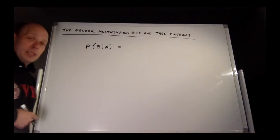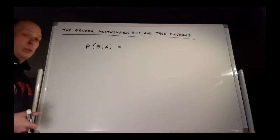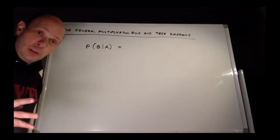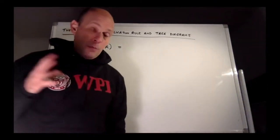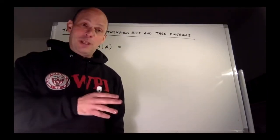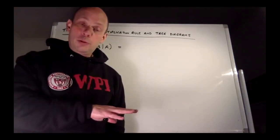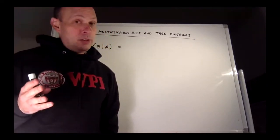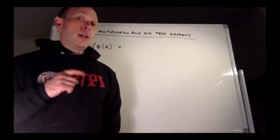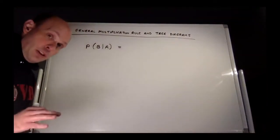Welcome to our next probability lesson. Today we want to talk about the general multiplication rule and tree diagrams. We already know the general addition rule: 'or' means add, so the probability of A or B equals the probability of A plus the probability of B minus the probability of A and B. Today we'll see that 'and' means multiply, as we explore the general multiplication rule.